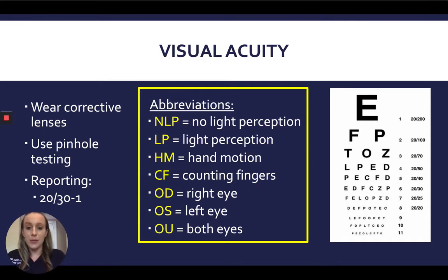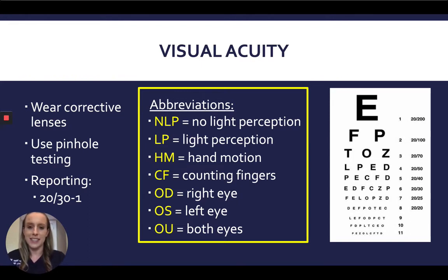Some common abbreviations used when reporting visual acuity: NLP stands for no light perception; LP means the patient can see light; HM stands for hand motion; and CF means the patient can count fingers. These four are used when the patient has trouble seeing any letters on the chart. Additionally, OD stands for right eye, OS stands for left eye, and OU stands for both eyes — abbreviations you'll commonly see in ophthalmology notes and recommendations.